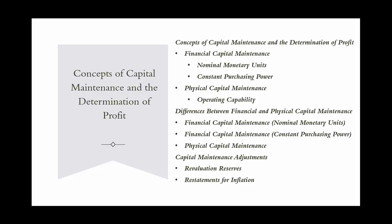The nominal monetary units approach measures capital in terms of nominal money value and does not adjust for changes in purchasing power due to inflation. For example, XYZ Corporation starts the year with $3 million in net assets. During the year, it earns $1 million in profits and distributes $500,000 to shareholders as dividends. At the end of the year, its net assets are $3,500,000 ($3 million plus $1 million minus $500,000). Since ending net assets exceed beginning net assets, XYZ Corporation has maintained its financial capital and earned a profit.